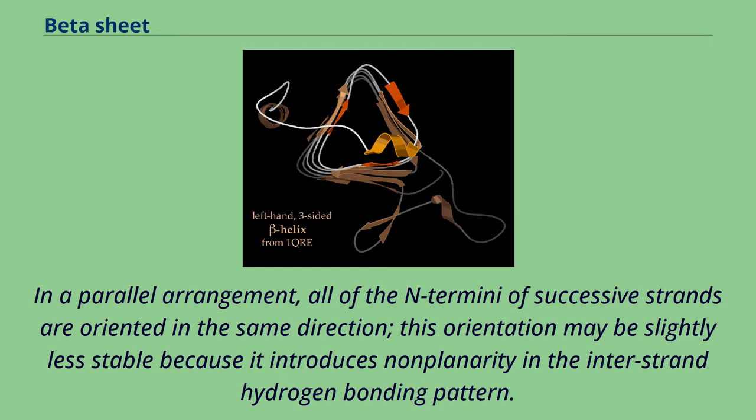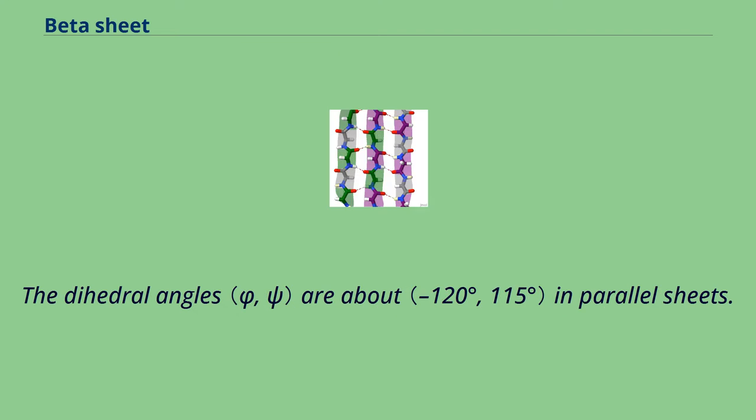In a parallel arrangement, all of the N-terminus of successive strands are oriented in the same direction. This orientation may be slightly less stable because it introduces non-planarity in the inter-strand hydrogen bonding pattern. The dihedral angles are about in parallel sheets.